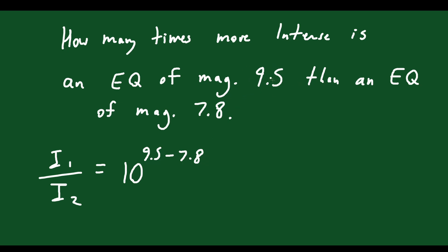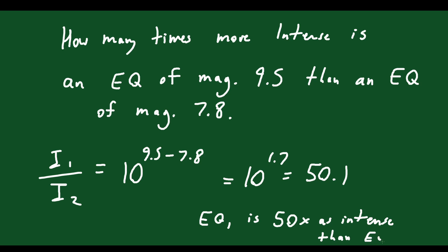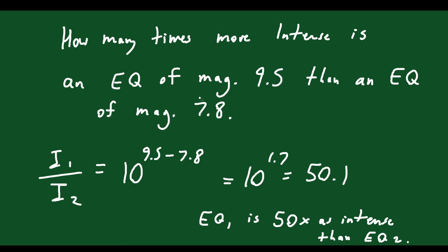You want to know how many more times the 9.5 magnitude is, so 9.5 goes in your M1 spot. You calculate this and get 10 to the 1.7, which is approximately 50.1. So earthquake one is about 50 times as intense as earthquake two. Even though 9.5 and 7.8 aren't far apart numerically, it represents an intensity difference of 50 times — that's why this scale is useful, since earthquakes range so drastically in their intensity.